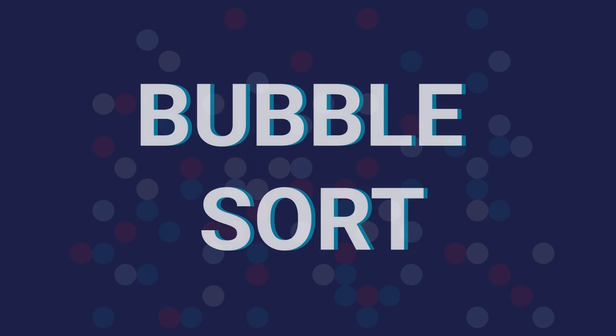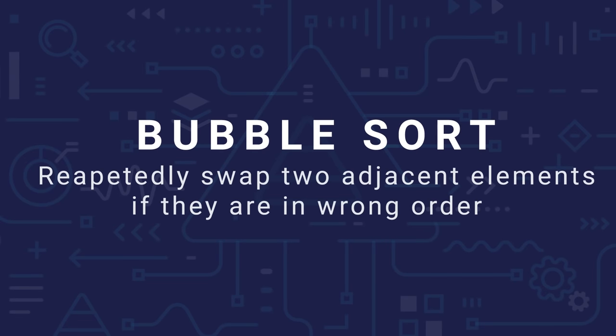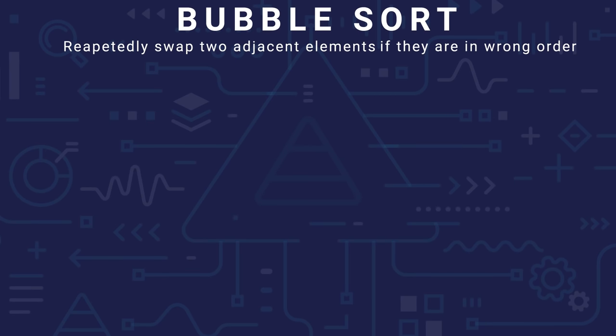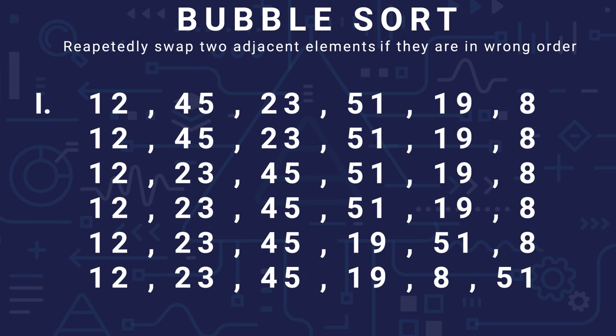Hi everyone, welcome to your college. Now we are going to study another sorting technique called bubble sort. When you do bubble sort, one thing you have to keep in mind is that we repeatedly swap two adjacent elements if they are in the wrong order. How we implement this will become clear through the example.